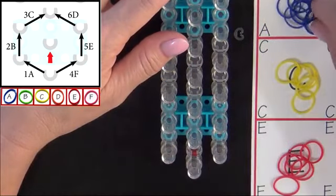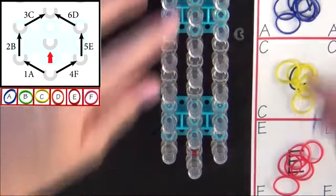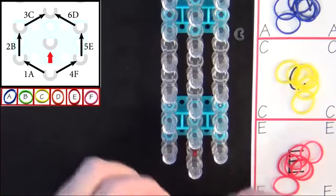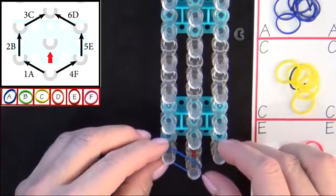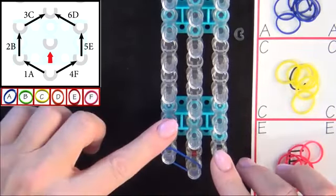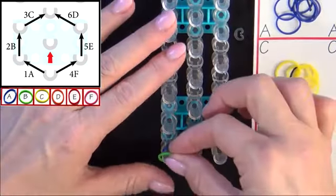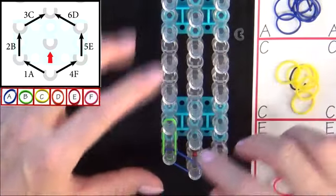You'll start from the middle pin and the first band that you place will be 1A. You'll be using your A colored band. Next, you'll place 2B. That goes up the side of the loom.